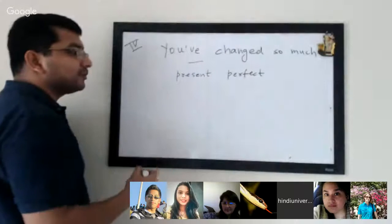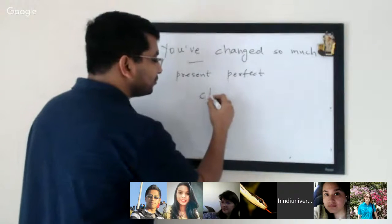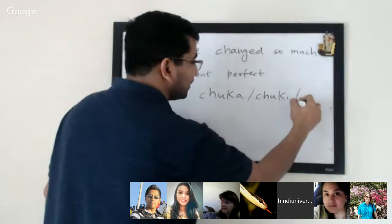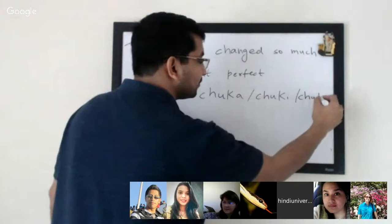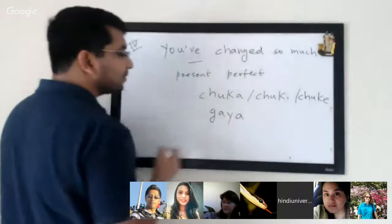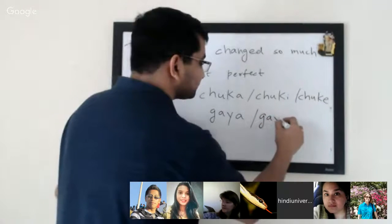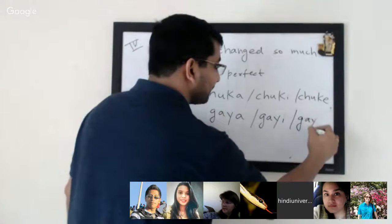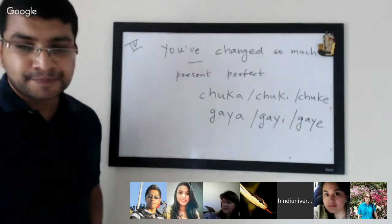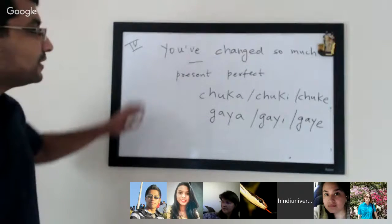If you remember from the first half of this class, I told you that in general we use 'chuka,' 'chuki,' and 'chuke' with the verb — or 'gaya,' 'gai' if the verb calls for it. This is exactly what we'll be using in this sentence as well.